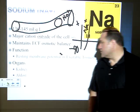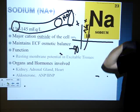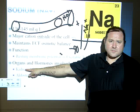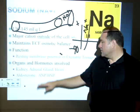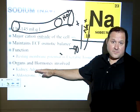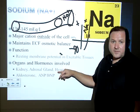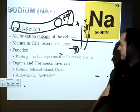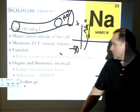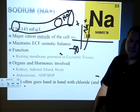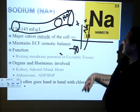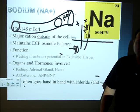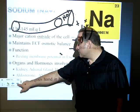Organs and hormones involved in sodium regulation include the kidney, where sodium is maintained. The adrenal gland is where aldosterone is made. The heart is where the natriuretic peptides are made. Sodium most often goes hand in hand with chloride — sodium is positive and chloride is negative.